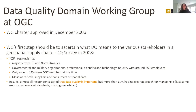This group was established in 2006 and one of the first items on the program of work was to learn what data quality means to various stakeholders in the geospatial supply chain — all sorts of bodies involved in the production or consumption of spatial data. The survey had more than 700 responses from a wide range of organizations; interestingly, only 17% were OGC members at the time, and most respondents were both suppliers and consumers of spatial data.